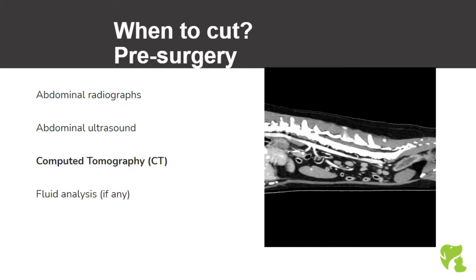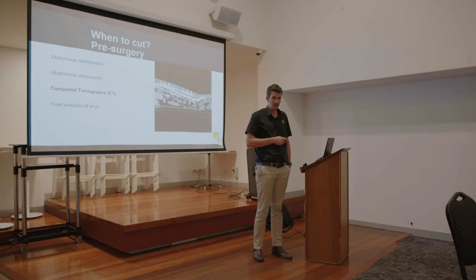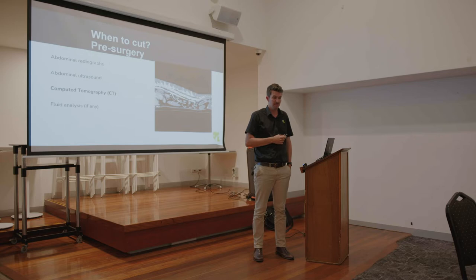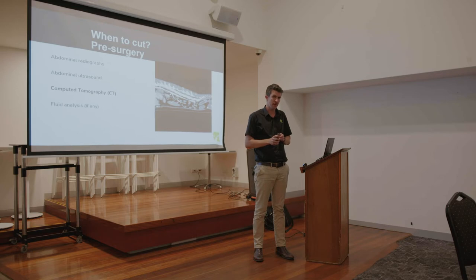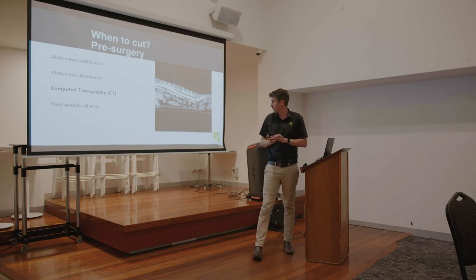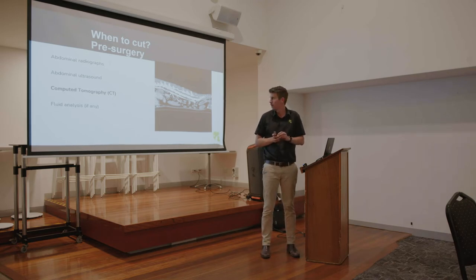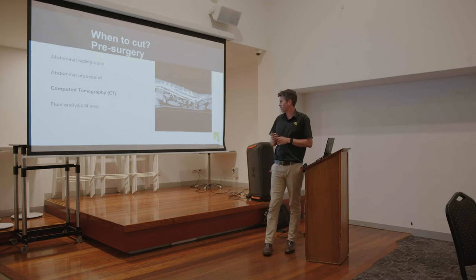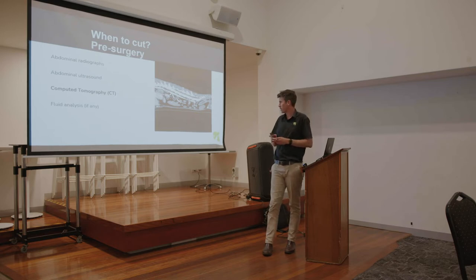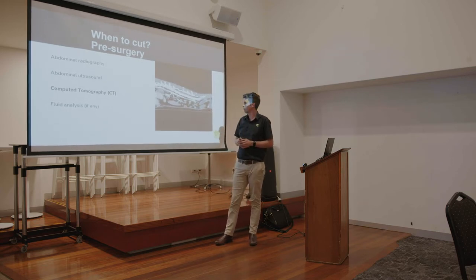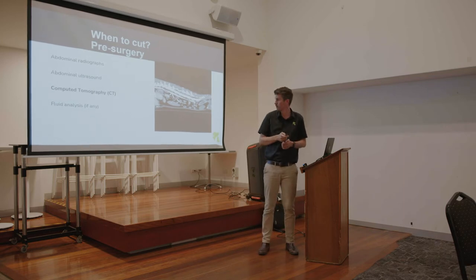CT scans — we use these quite a bit, especially for metastatic screening for pretty much any tumour. It's a lot more sensitive, especially in the thorax, than radiographs. We use a lot of iohexol IV contrast in these cases. This CT was for an 18-month-old dog we were looking at for a liver shunt — you can see the aorta running the whole way down and how bright the contrast shines once it enters the system.